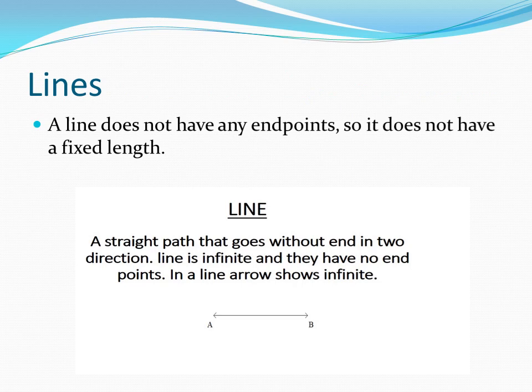Next, we will see lines. A line does not have end points, and it does not have a fixed length. See the picture — A and B is the line. I have put arrows on both ends, which means this line is not ending anywhere. It goes in a straight path in both directions. A line is infinite and has no end points. We represent a line using arrow symbols.